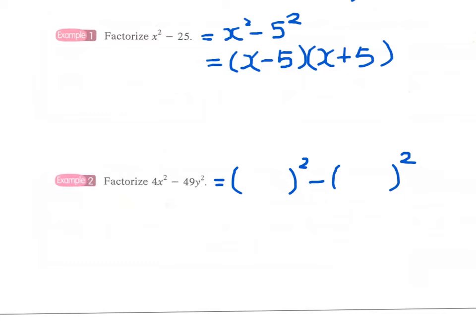4x squared we can write as the square of 2x, and then 49y squared is the square of 7y. Now we can see that this is actually the form of difference of two squares: the square of 2x minus the square of 7y. Therefore, our answer will be 2x minus 7y times 2x plus 7y.